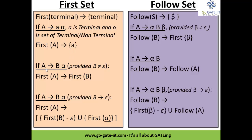In the case of A gives B-alpha where B does not give epsilon — epsilon is the empty string — then first of A can be calculated as first of B. In the other case, where B gives epsilon, then first of A gives first of B minus epsilon, unioned with first of alpha.